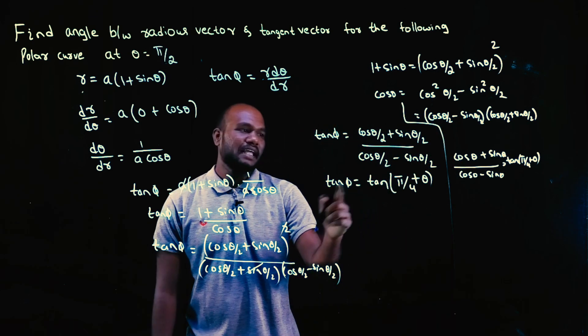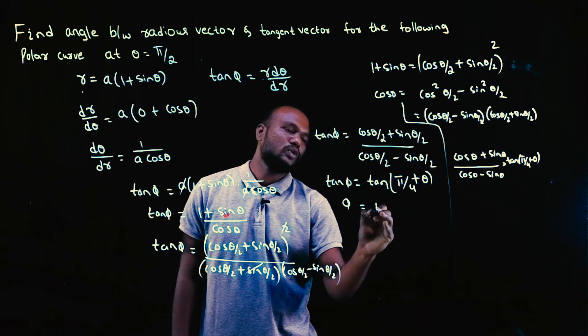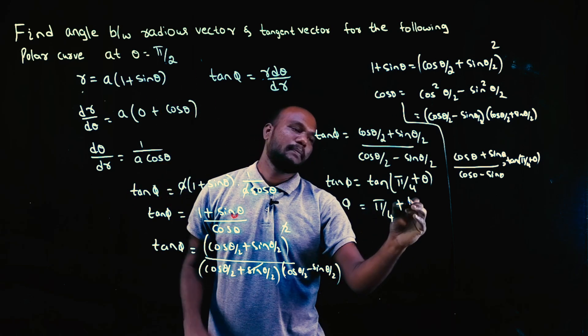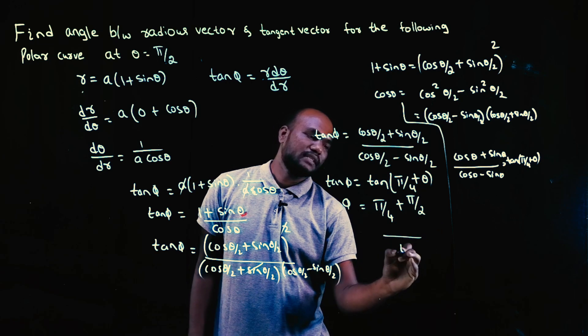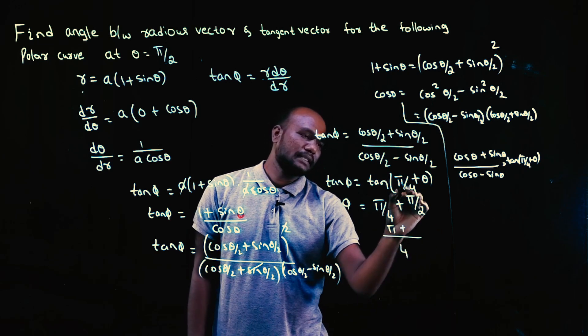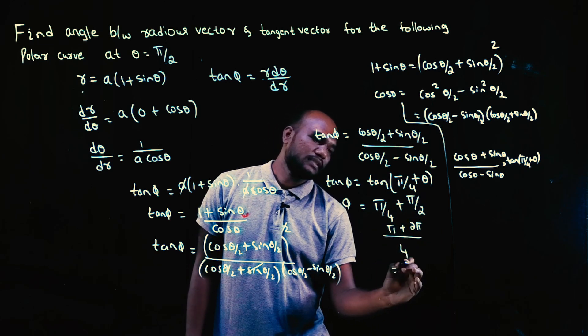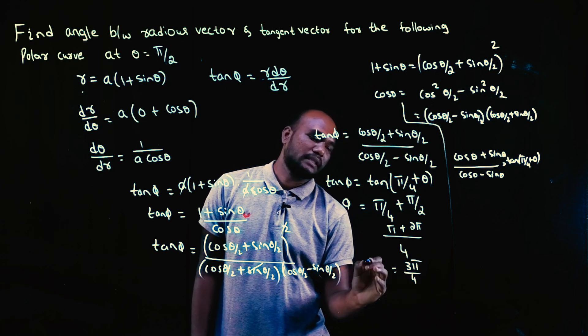The next format is tan can be taken out. So φ equals π/4 + θ/2. Theta value is π/2. 4 is the LCM. So one π plus 2θ, that is 2π. So this will become 3π/4.